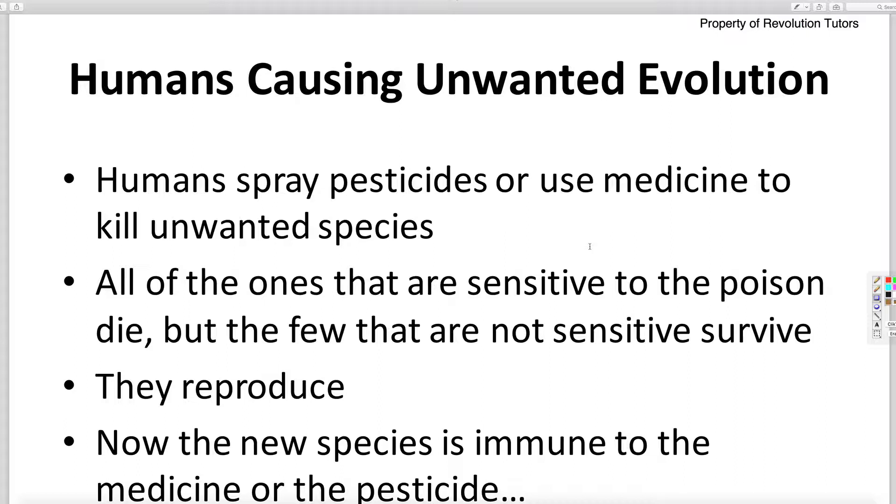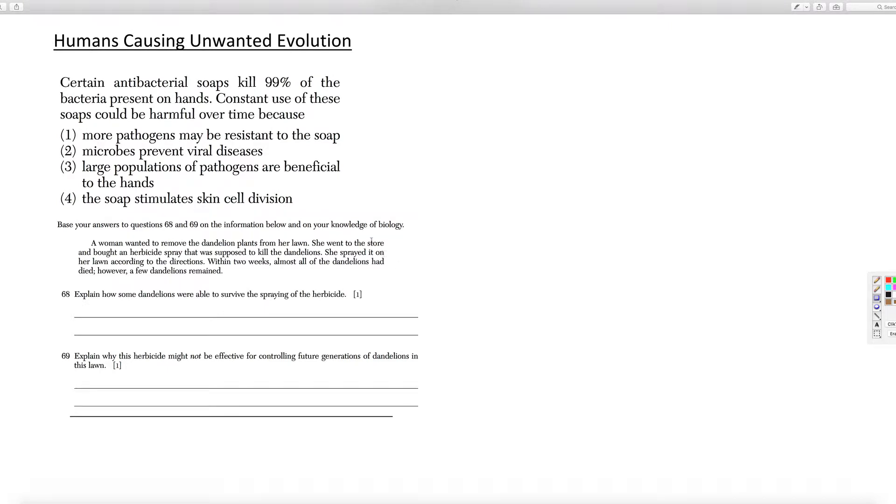So, they'll keep evolving and we're making them stronger and stronger. Same thing with pesticides. We spray the pesticides on the dandelions. The animals eat the dandelions and they die. Some of them don't die. Those reproduce. And now, the reproduced ones have a gene that is resistant to the pesticides. So that's us causing unwanted evolution. So the soap, sometimes they say using soap is bad. It'll help the more pathogens to be resistant to the soap.